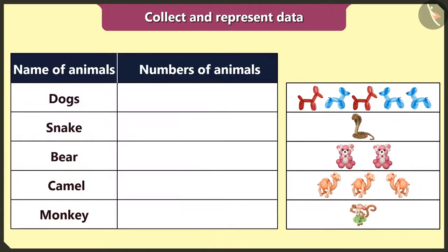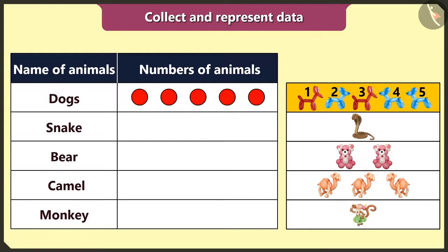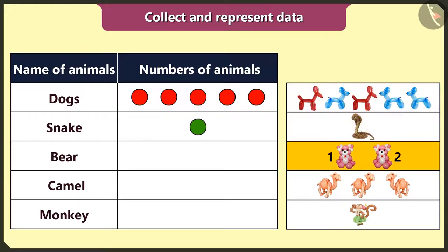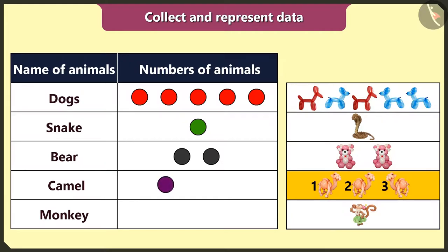Now I will make a table like this and represent all the data in it. There are five dogs, so five circles. One snake, so one circle. Two bears, so two circles. Three camels, so three circles. And one monkey, so one circle.